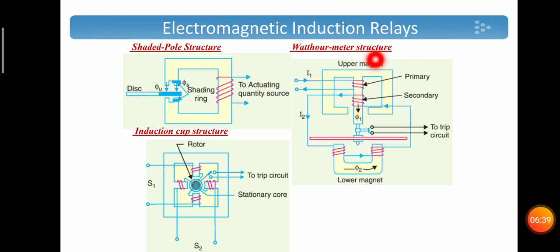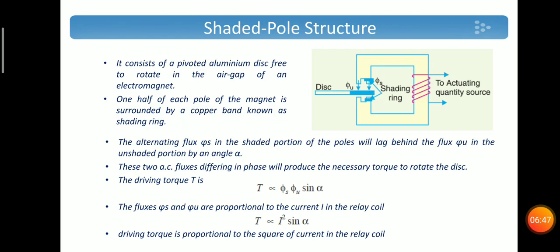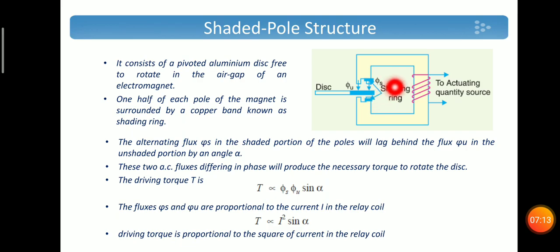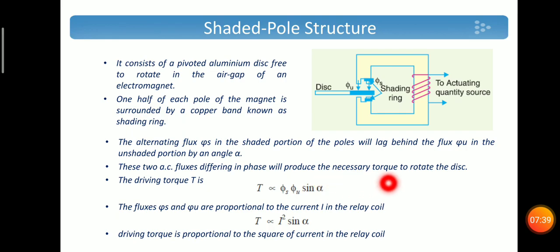Different types of electromagnetic induction relays are shaded pole structure, watt-hour meter structure, and induction cup structure. The shaded pole structure consists of an aluminum disc free to rotate in the air gap of an electromagnet, and each half of each pole of the magnet is surrounded by a copper band known as a shading ring. The alternating flux phi-1 in the shaded portion of the pole will lag behind the flux phi-1 in the unshaded portion. Both fluxes have a phase difference of alpha — the shading is done to get this phase difference — and these two AC fluxes differing in phase produce the necessary torque to rotate the disc.